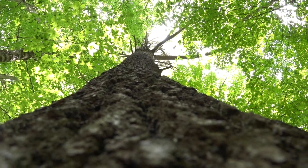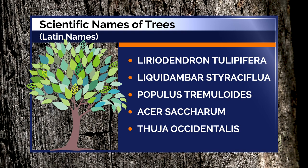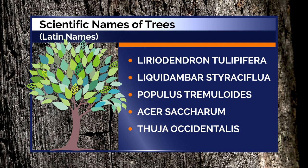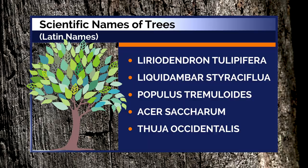This is what we call a tree: Liriodendron tulipifera, Liquidambar styraciflua, Populus tremuloides, Acer saccharum, Thuja occidentalis — Trium maximum? Did you just say Trium maximum? Okay, that wasn't real, but every living thing does have a scientific name, or what we'd call a Latin name. It also has a common name, and sometimes two or more common names — like sugar maple or hard maple, or aspens, popples, poplars. They're the same thing.